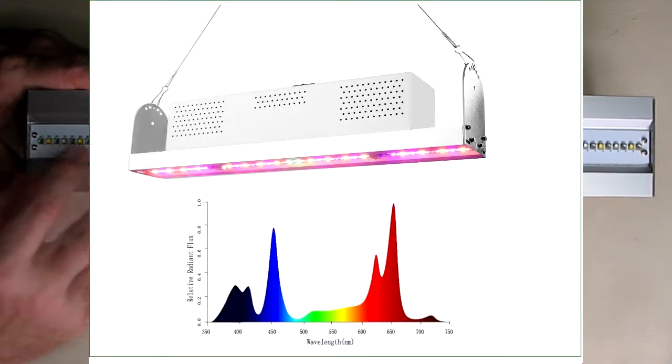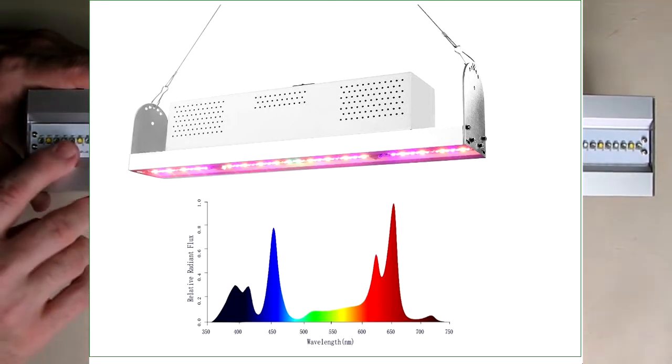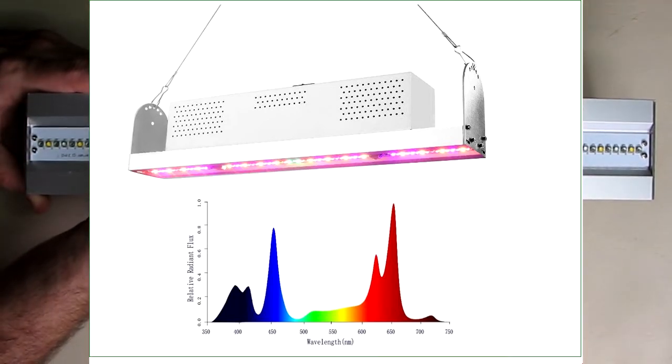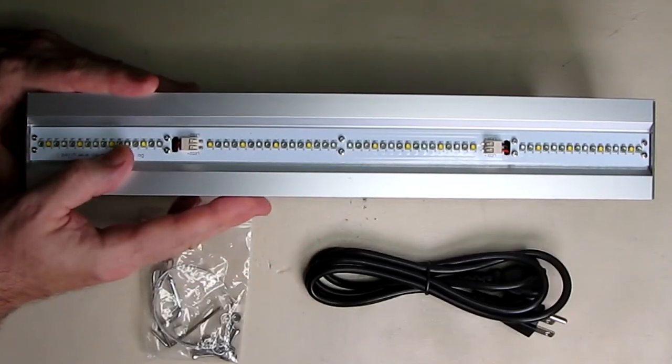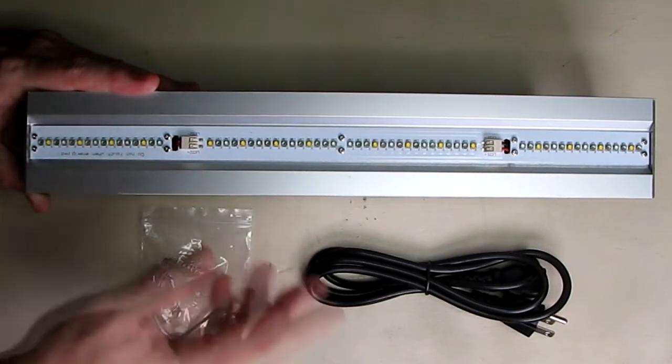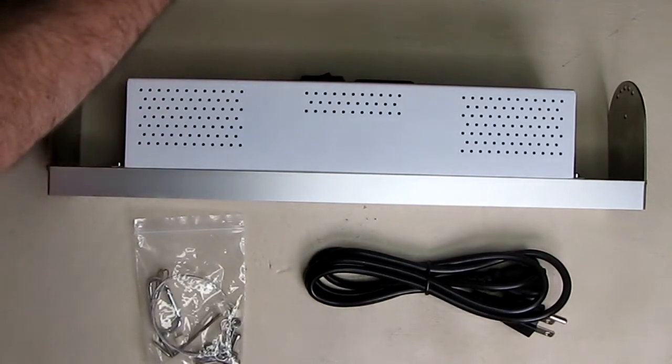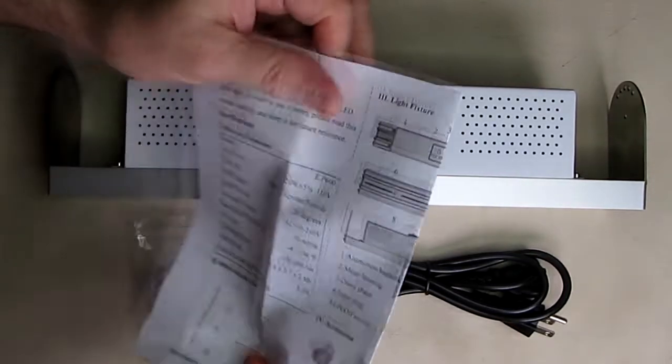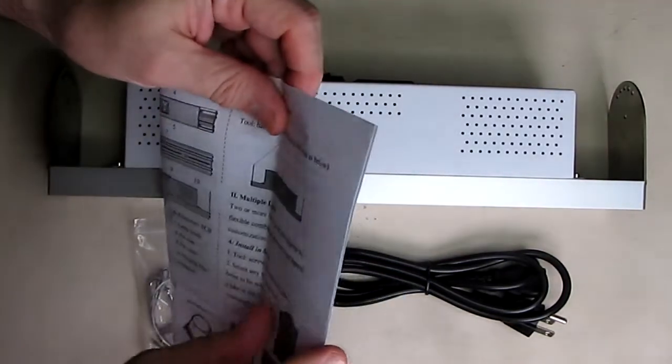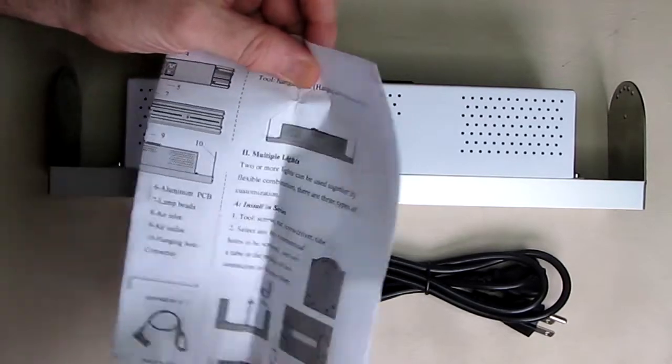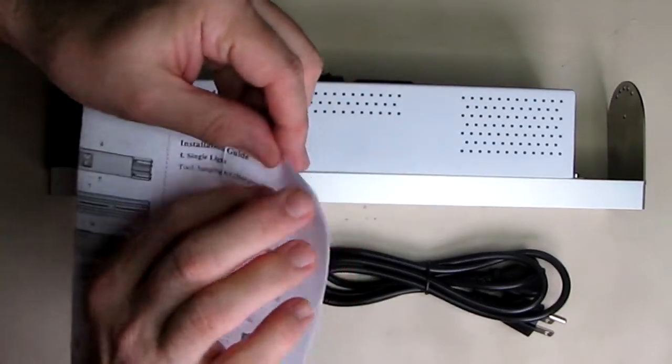This will illuminate up to a two foot by two foot growing area. If you need more, you can put them in series or parallel, and the included instruction manual does show you how to mount them in series and in parallel, right here.